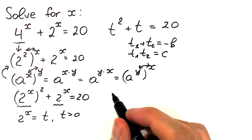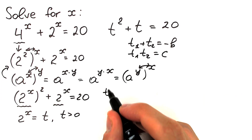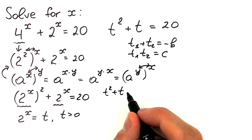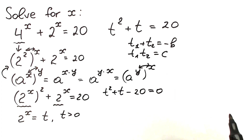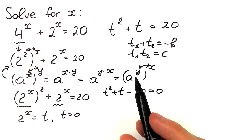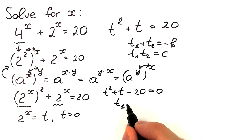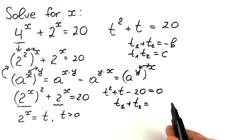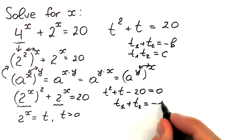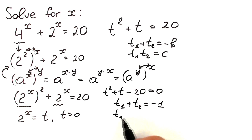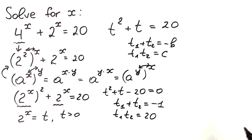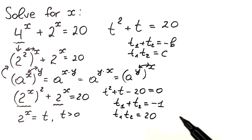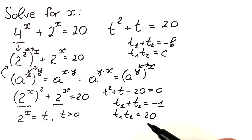First, let's create the standard quadratic equation: t squared plus t minus 20 equals 0, bringing 20 from the right to the left. From Vieta's theorem: the sum of roots t1 plus t2 equals minus b, which is minus 1. And the product t1 times t2 equals c, which is negative 20.